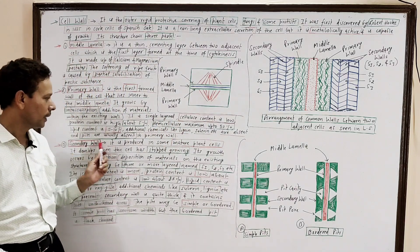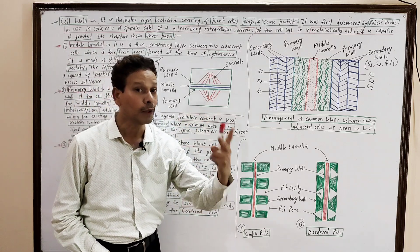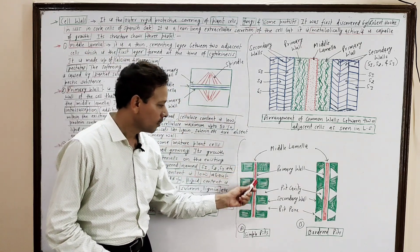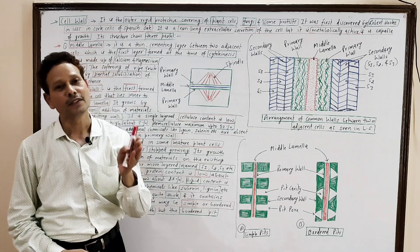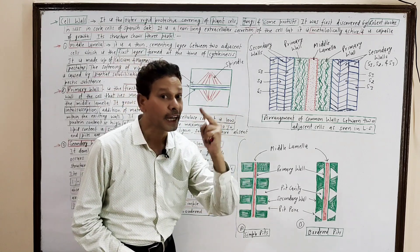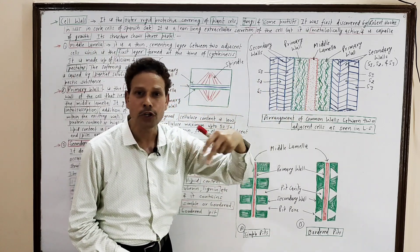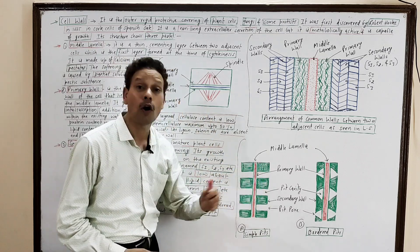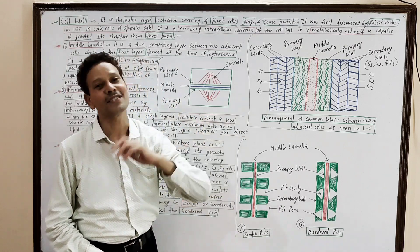The third part is the secondary wall. This secondary wall is produced in some mature plant cells, and it develops when a plant cell stops its growth. This primary wall grows by intussusception, but this secondary wall grows by accretion. Intussusception means deposition of material within the existing layer, but accretion means deposition of material occurs on the existing layer.